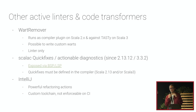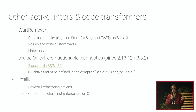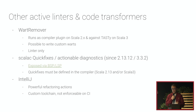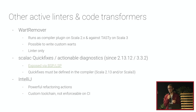A cool feature added recently on both the 2.13 and Scala 3 tracks is quick fixes, or actionable diagnostics. It's a way for the compiler to signal to the IDE that something could be done — they appear as a code action and the compiler rewrites the source. The gotcha is that these quick fixes must be defined in the compiler codebase and duplicated for 2.13 and Scala 3. IntelliJ also has powerful refactoring actions, but they're based on a custom toolchain and can't be enforced on CI.